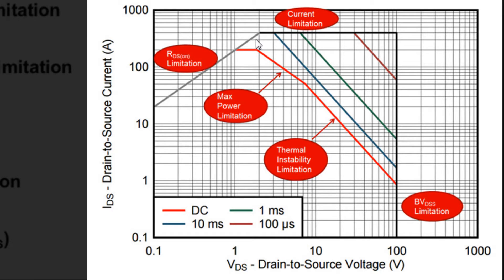The next limitation is the current limitation. These different pulse values have a limitation of 400 amps, and we cap this device at 400 amps for reasons I'll discuss in my next video entry on current limitations. The DC limit of this device is 200 amps. The third limitation is the maximum power limitation line, which has a constant slope of negative one because every point on this line represents the same constant power — P equals IV — giving a slope of negative one on a logarithmic curve.